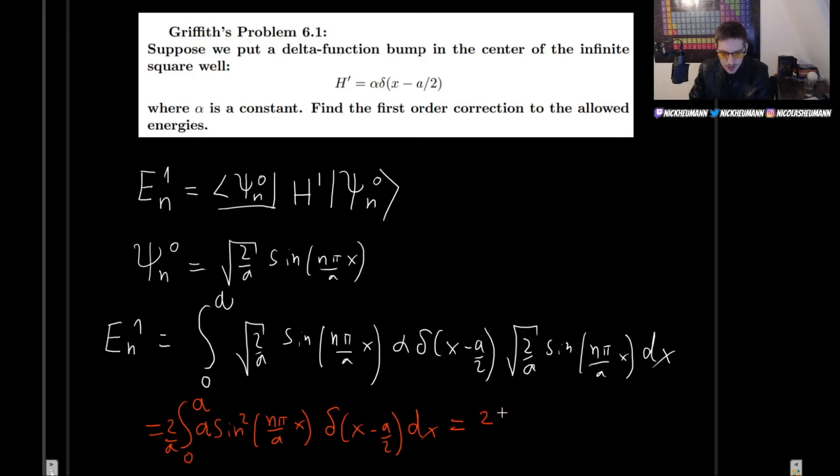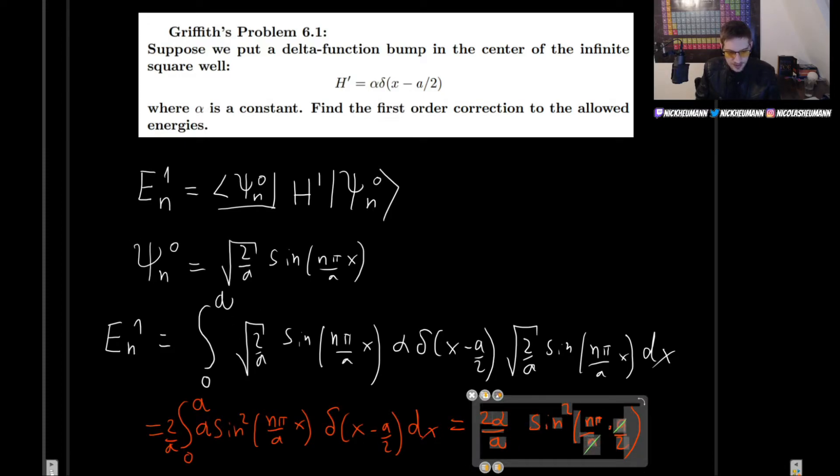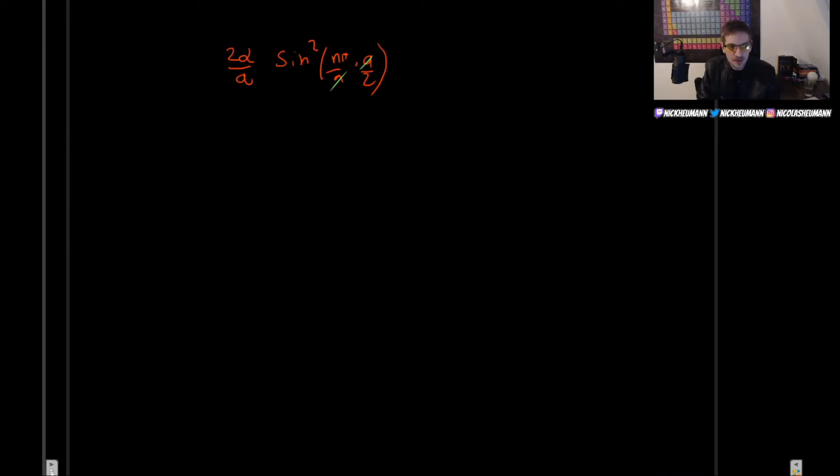So this integral is simply going to be 2 alpha over a, the constant that we're in front, times sine squared of n pi over a. And x will be at a over 2, so times a over 2. And the a's will simply cancel each other out. And now, what do we have here? Let me maybe copy this and bring it to the next slide so I can explain it a bit further.